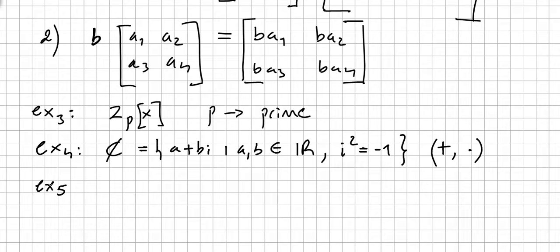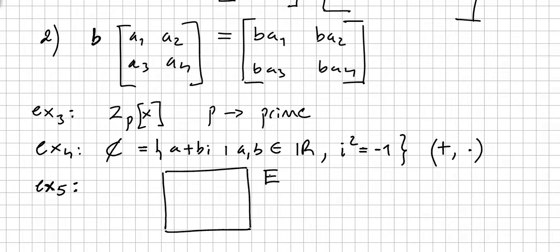Now I will give you another example which will probably look pretty trivial for you, but if you keep working hard on this you will see that it is a very important example. Let us say we have E, and E is a field, and F is a subfield of E. Then E is a vector space over F, and the operations are of course the operations of the field.